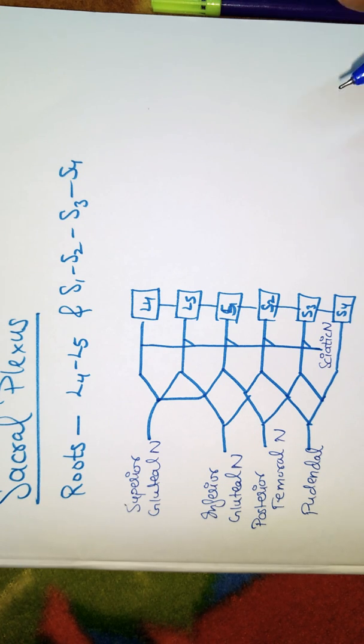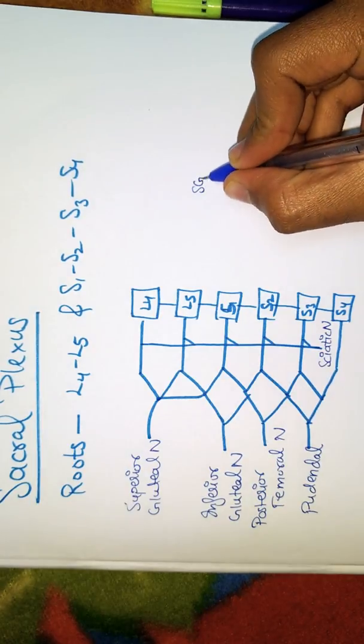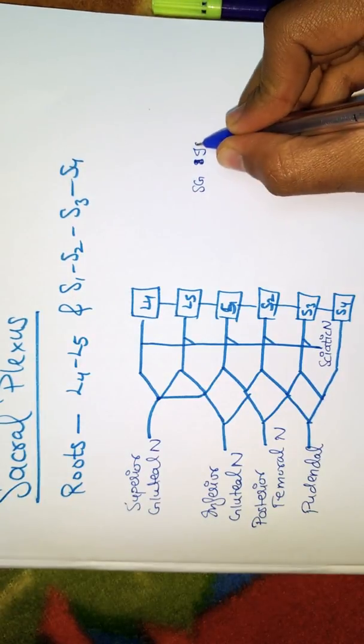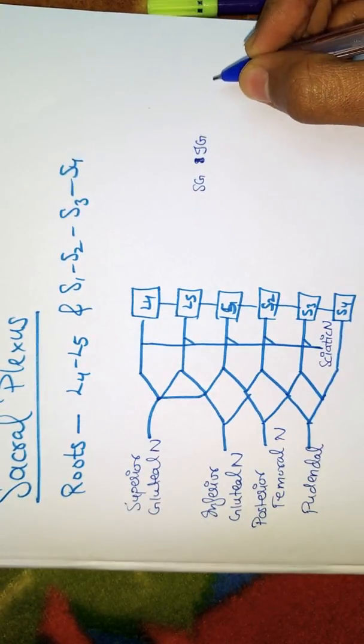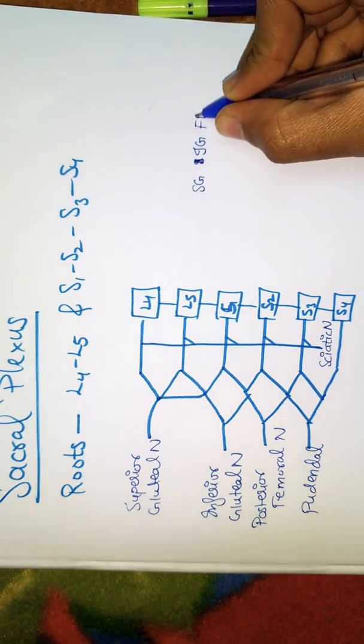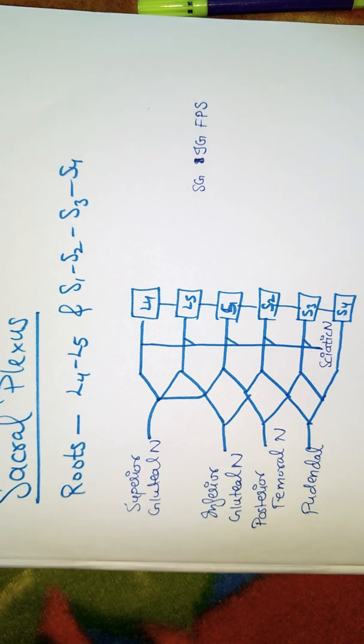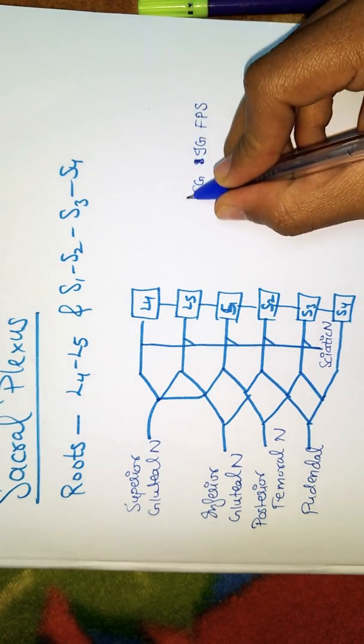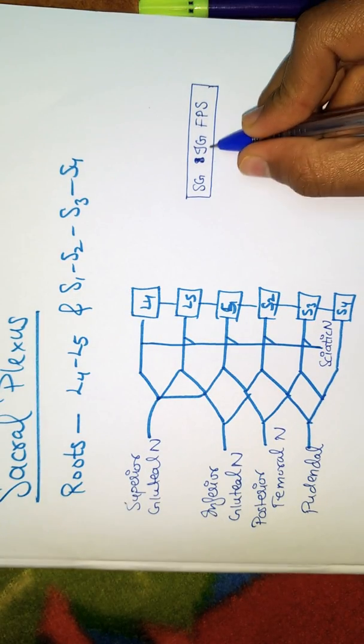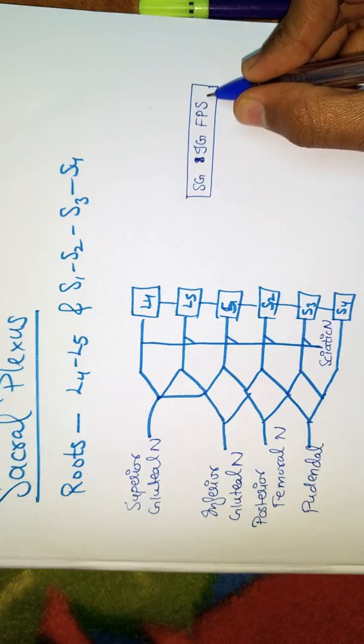The easy way to remember this is with a code: S-G-I-G F-P-S. That's the code to remember the sacral plexus nerves.